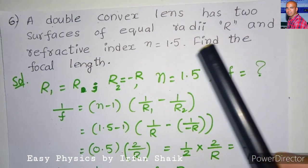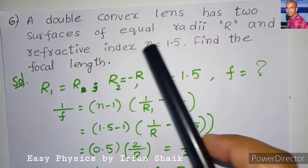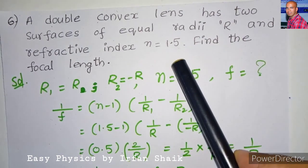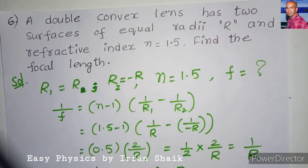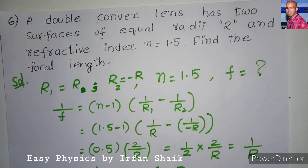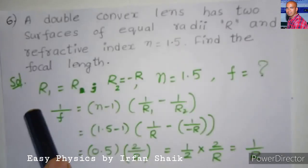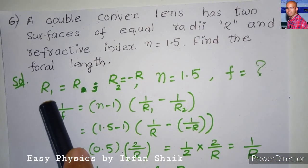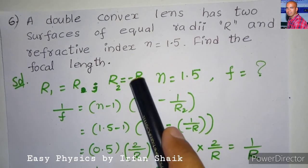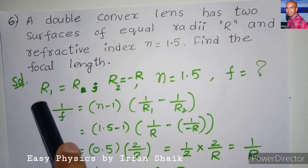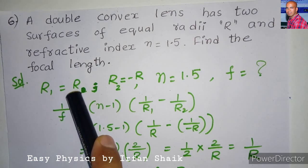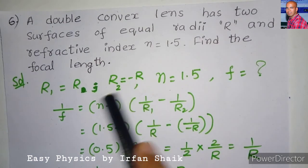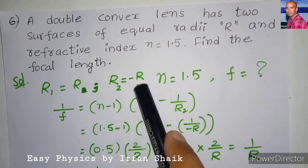A double convex lens has two surfaces of equal radii R and refractive index n = 1.5. Find the focal length. Since both radii are equal, R1 is taken as +R and R2 is taken as −R. The refractive index is 1.5 and we need to find focal length F. The lensmaker's formula is 1/F = (n − 1)(1/R1 − 1/R2).